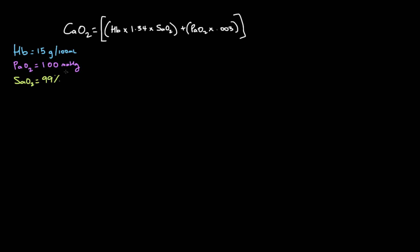Here are the normal values we'll use: 15 grams per 100 mls is a fairly normal adult male hemoglobin value, a PaO2 of 100 millimeters of mercury, and an oxygen saturation of 99 percent. Let's plug those numbers in and see what we get for our oxygen content.